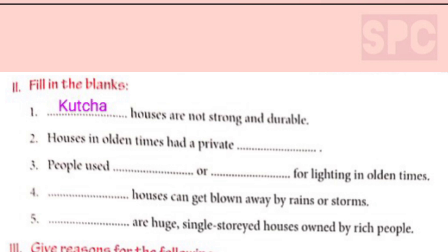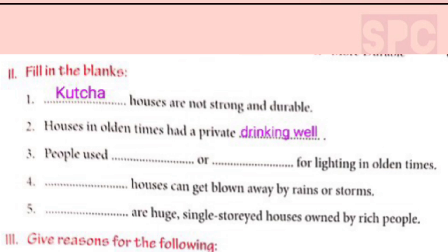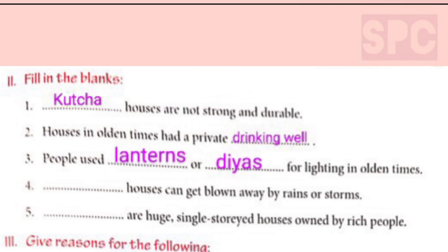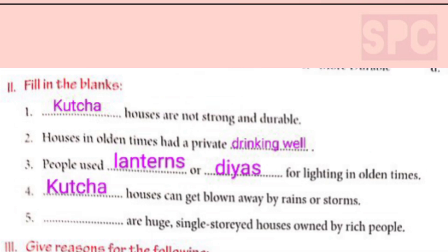Question 2: Houses in olden times had a private dash. Answer: houses in olden times had a private drinking well — we write 'drinking well' in the blank. Question 3: People used dash or dash for lighting in olden times. Answer: people in olden times used lanterns or diyas for lighting their houses. Question 4: Dash houses can get blown away by rains or storms. Answer: kaccha houses — kaccha houses are temporary and can be easily blown away by rains or storms.